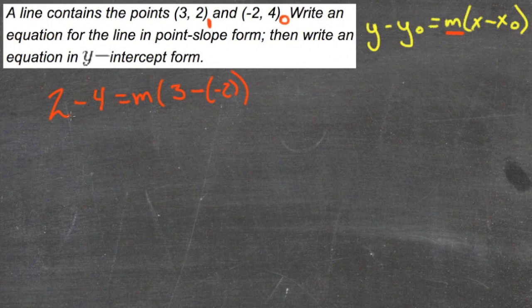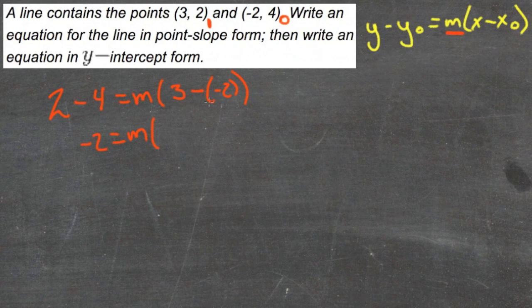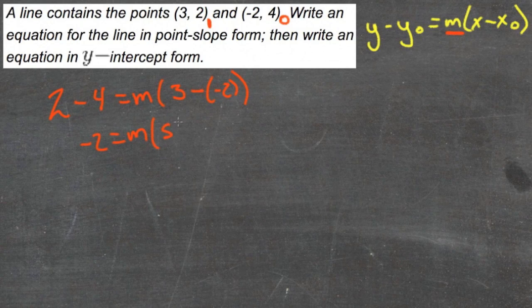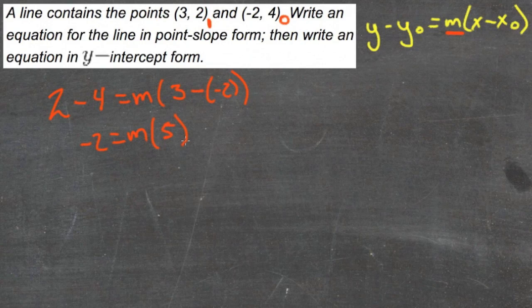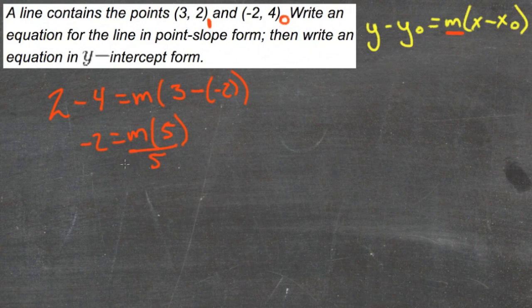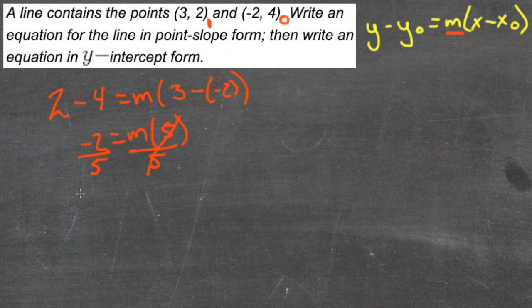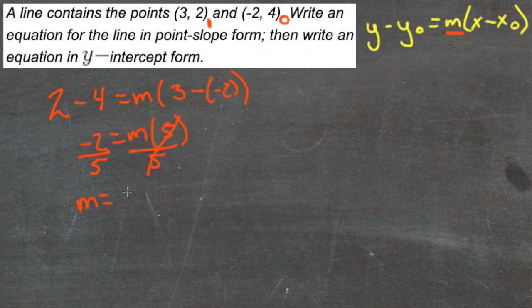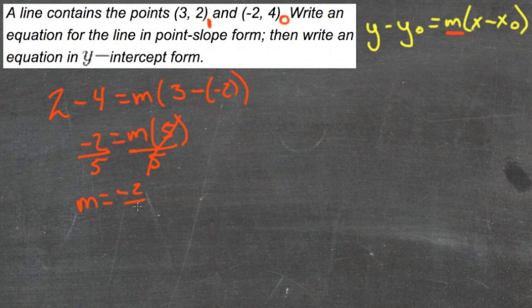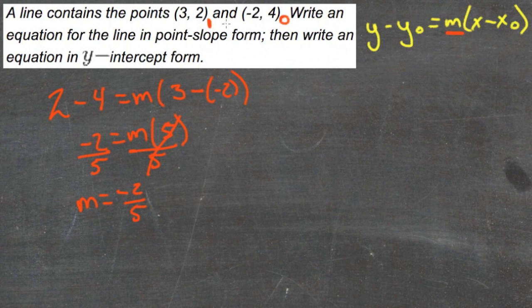So then we do the math. 2 minus 4 is -2 equals m times 3 minus -2, that's 5. And we need to get rid of the 5, so we'll divide both sides by 5. And we get the 5's cancel. m is the same thing as -2/5.